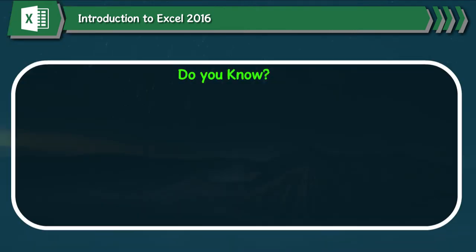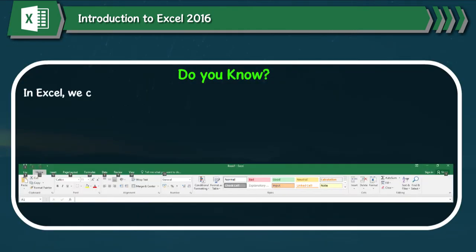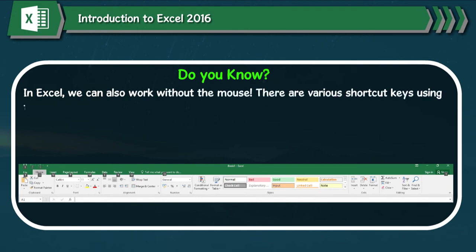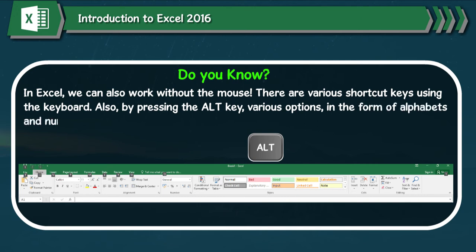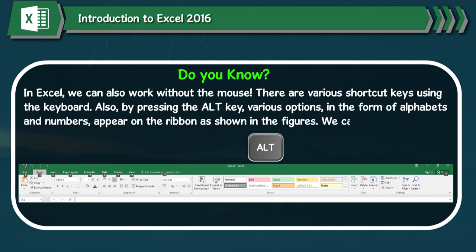Do You Know? In Excel, we can also work without the mouse. There are various shortcut keys using the keyboard. Also, by pressing the Alt key, various options in the form of alphabets and numbers appear on the ribbon. We can return to the previous option by pressing the Escape key.